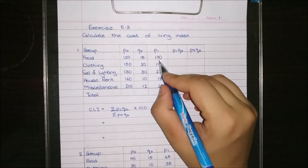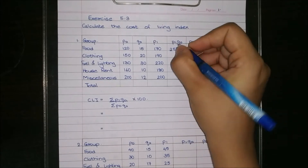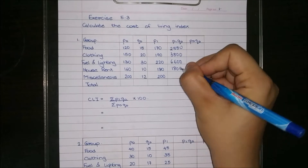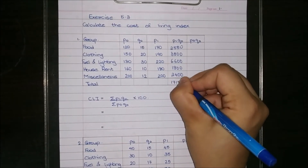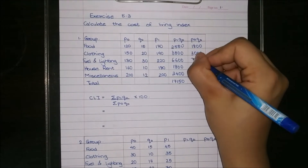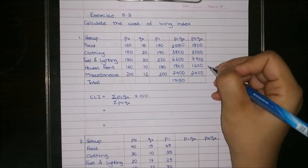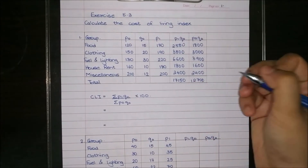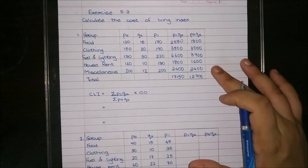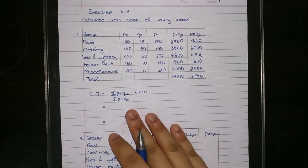So first p1 into q0 — we are multiplying these two columns. I am fast-forwarding this part because I feel you can do it. I understand that you might have an issue with the division, so that part you can do with me.